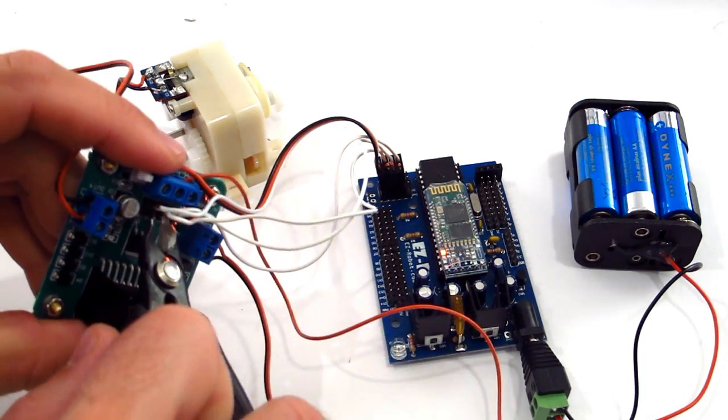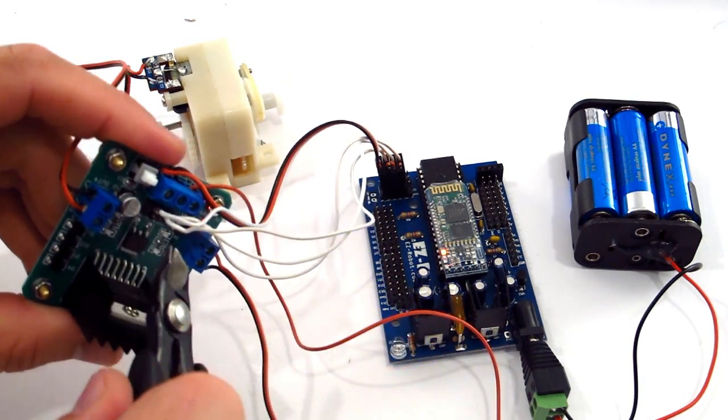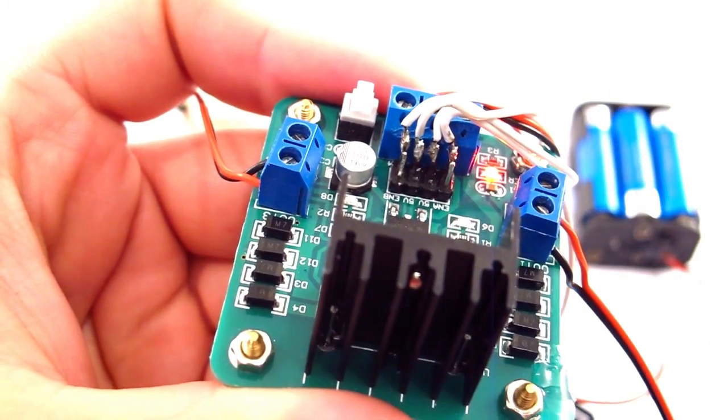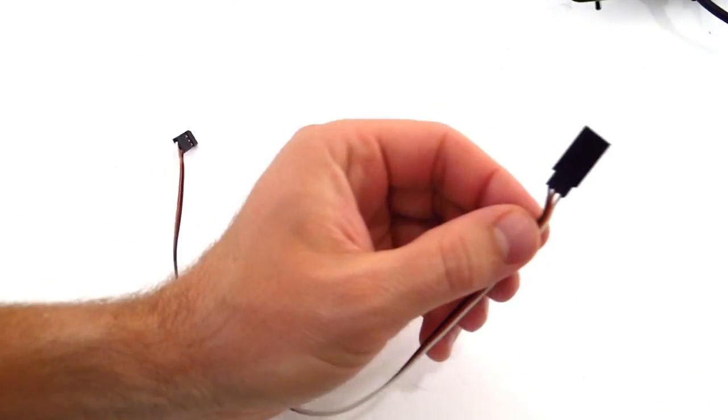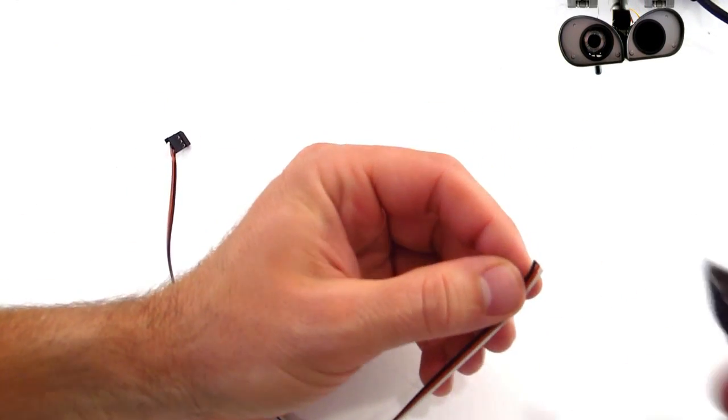Cut the middle two pins. So now it should look like that. Take your fifth peripheral cable. Cut the end off.